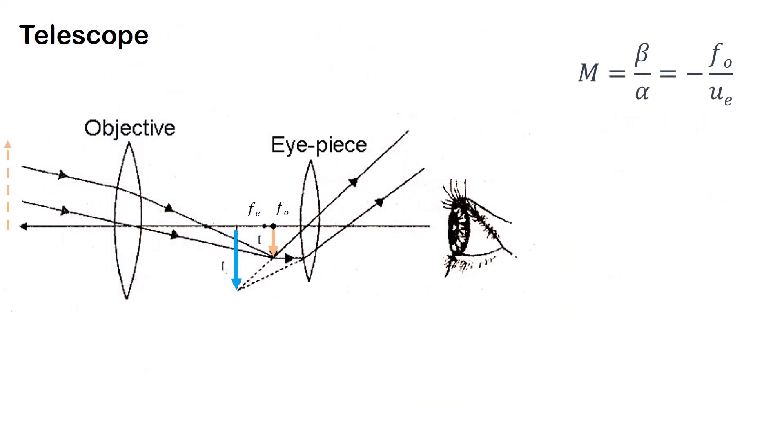In a telescope the rays come from infinity and they converge at the focus of the objective. Now we can adjust the eyepiece such that the image is on fe, in which case we get a relaxed vision, or it is between fe and the lens which gives us distinct vision.